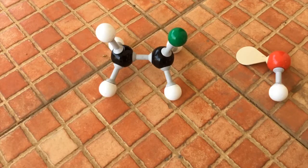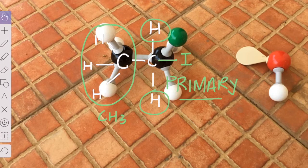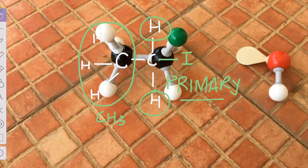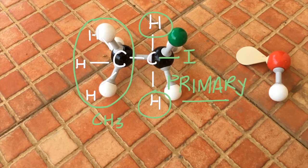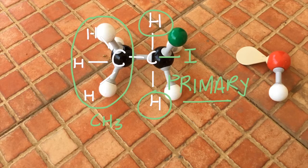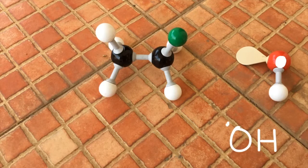First, we must realize that iodoethane is a primary halogenoalkane, with the halogen group attached to a carbon which is attached to two hydrogens and then a CH₃ — a primary halogenoalkane. The sodium hydroxide provides the nucleophile, OH, which is a very strong nucleophile with its lone pair and its negative charge.